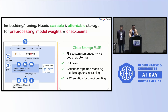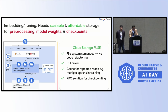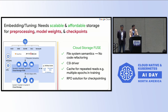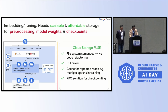For any cloud platform, we need scalable and affordable storage for pre-processing, model weights, or checkpoints. What Cloud Storage Fuse provides is a seamless abstraction for developers — all your buckets appear like file systems, and developers don't have to make any changes. All the data in the bucket shows like a file mount point, and the developer just reads the data like a file system. It's CSI-provided and it caches repetitive reads as well, which also helps reduce cost.